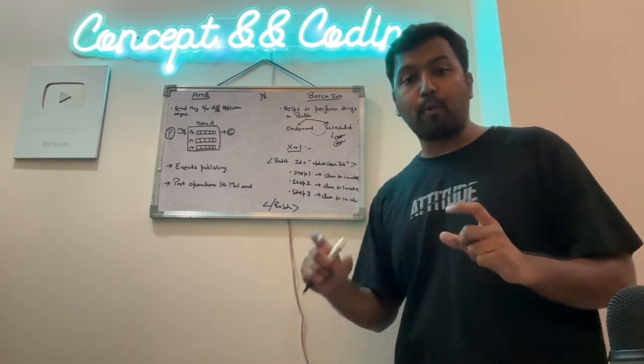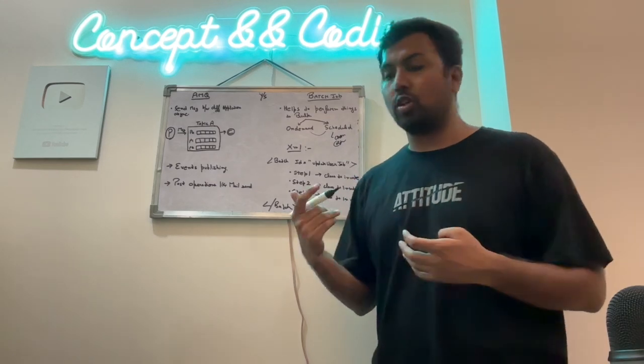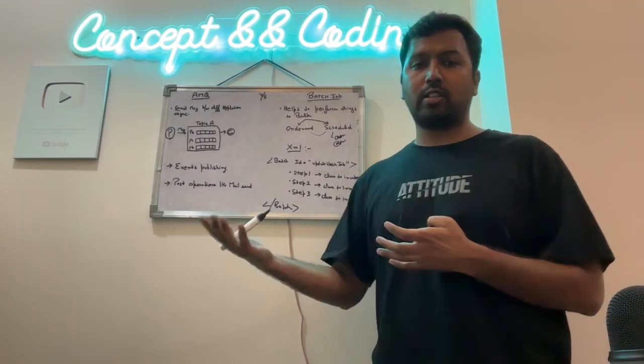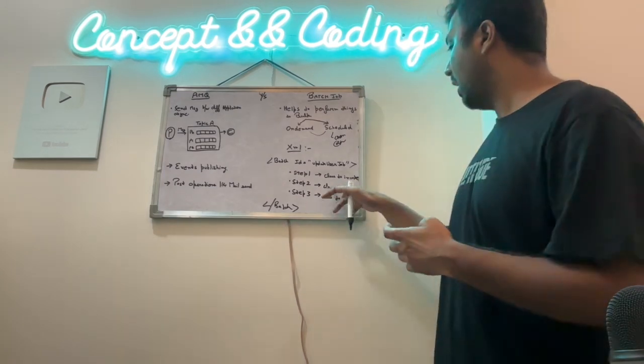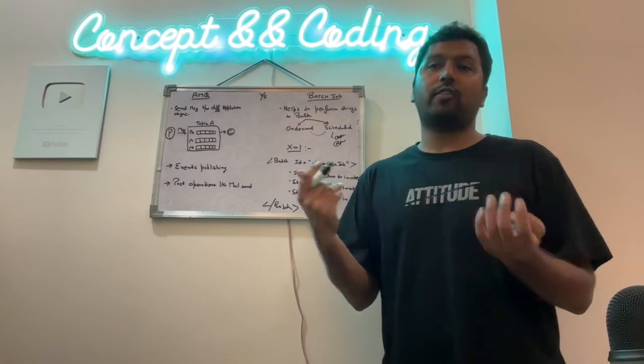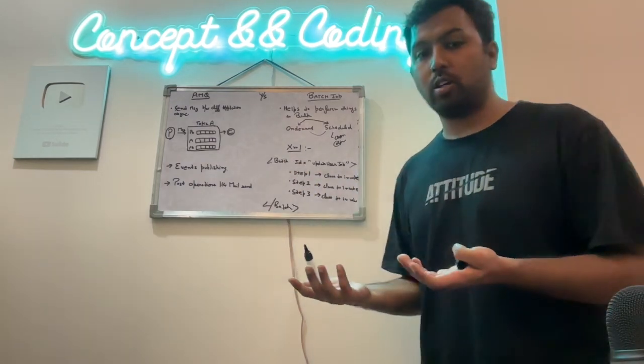Step 2 says that process. Once you have read the file, now start working on it. Whatever the class it has to invoke, you have written some business logic, what it has to do, it will do. Step 3, let's say, whatever the output comes, where I have to upload it, or what I have to show to the user.